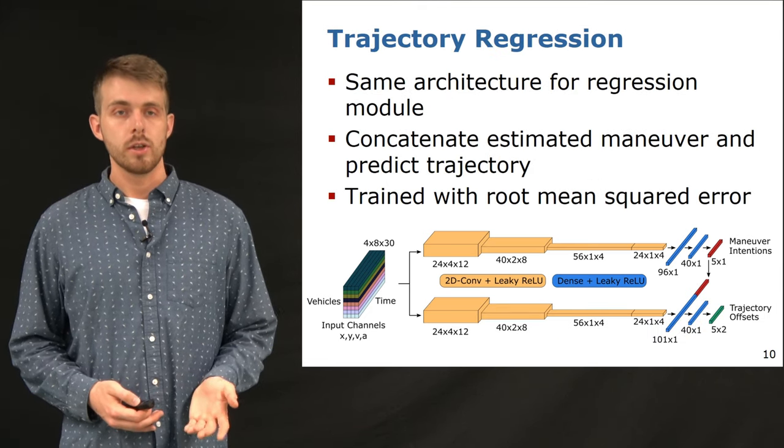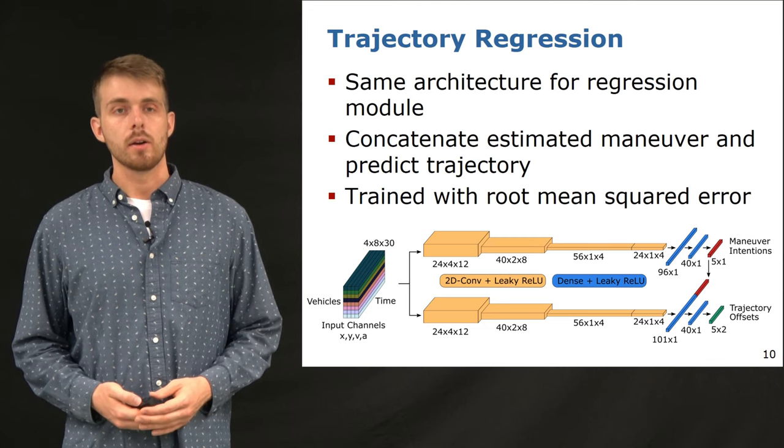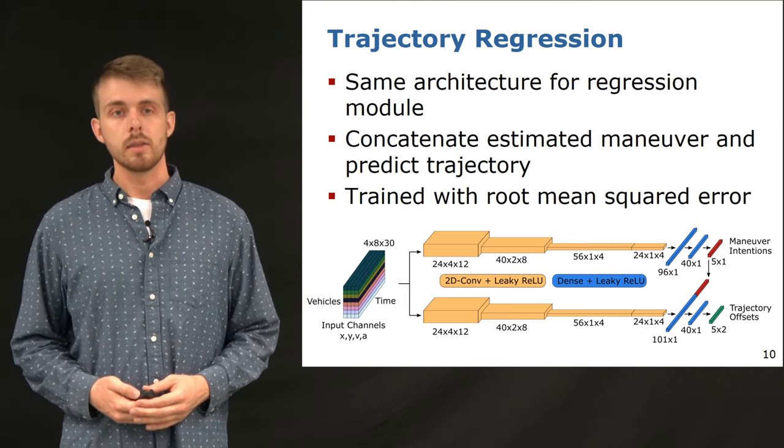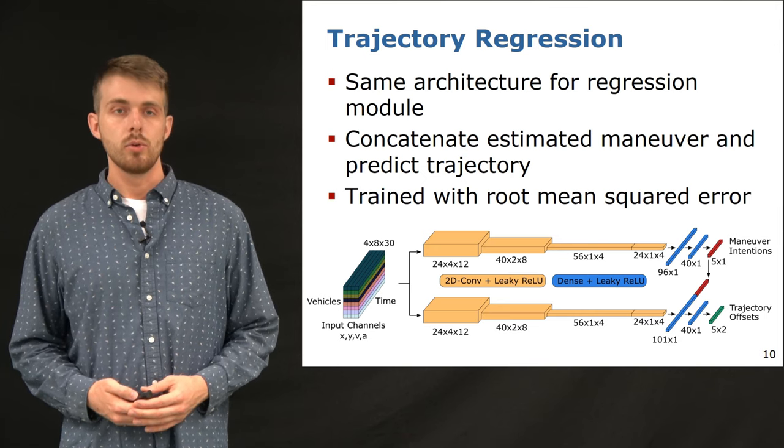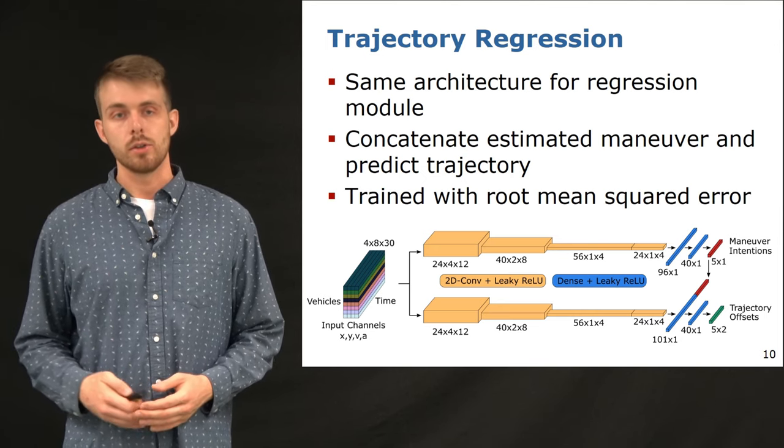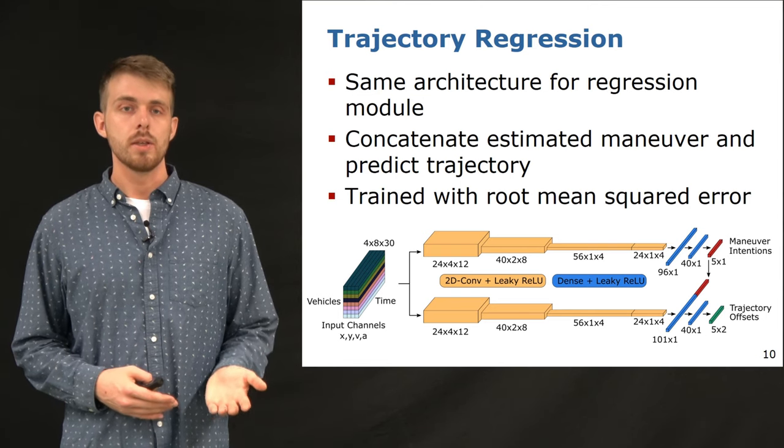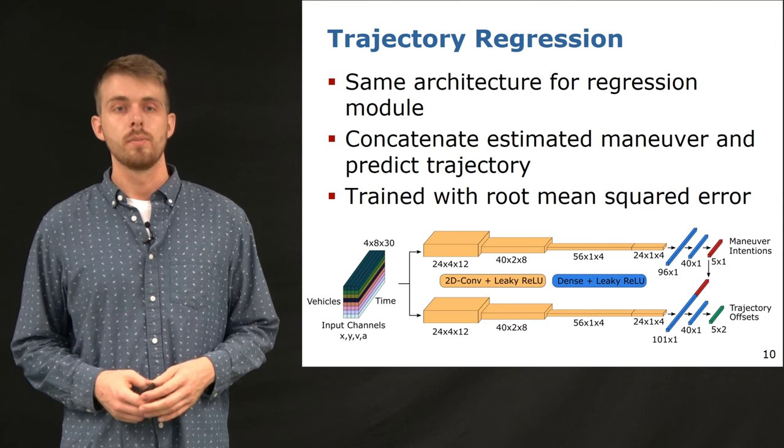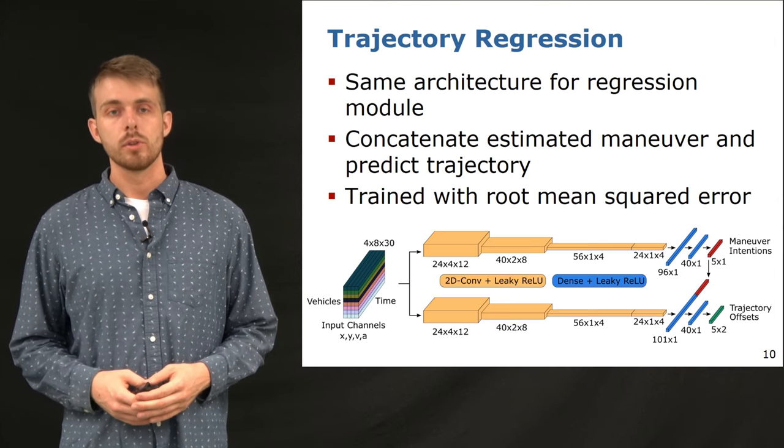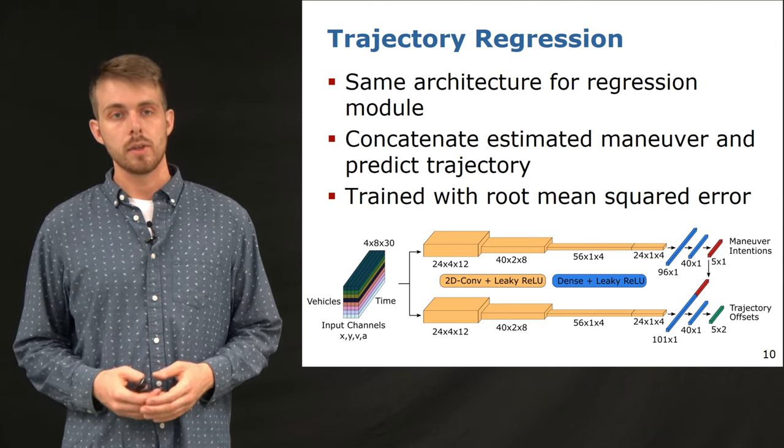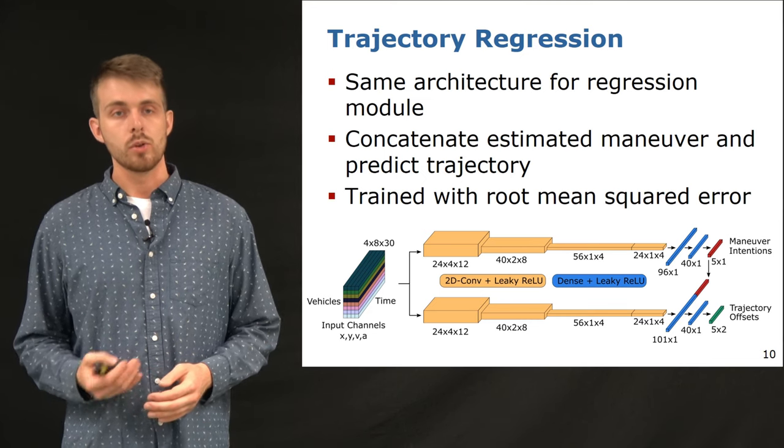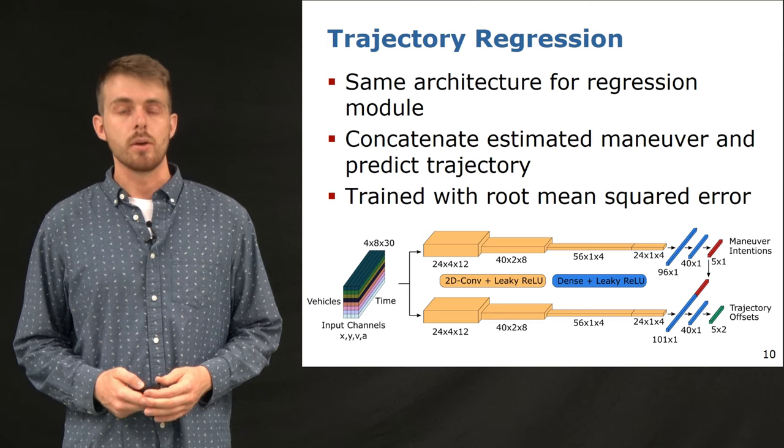The following trajectory regression module has a similar architecture than the presented classification part. At the first dense layer output, we concatenate the maneuvers for each future time step to guide the trajectory prediction. During training, we feed the ground truth maneuvers and during testing, we use the predicted maneuvers. The final dense layer outputs the future X and Y offsets of the target car with respect to the current location. We supervise the training with a root mean squared error loss.